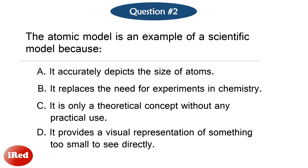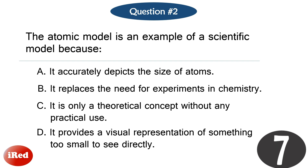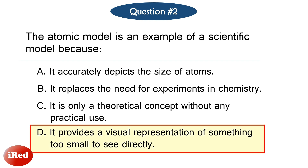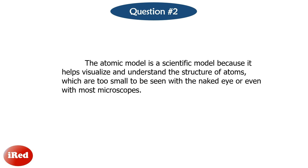Question number two. The atomic model is an example of a scientific model because... The correct answer is letter D: it provides a visual representation of something too small to see directly. The atomic model is a scientific model because it helps visualize and understand the structure of atoms, which are too small to be seen with the naked eye or even with most microscopes.